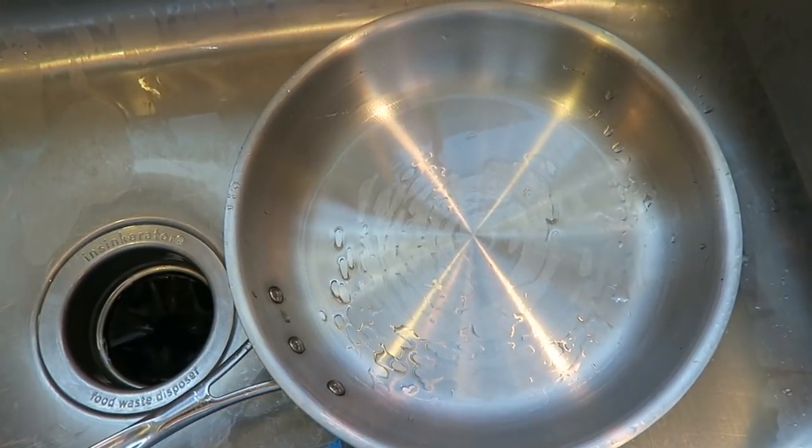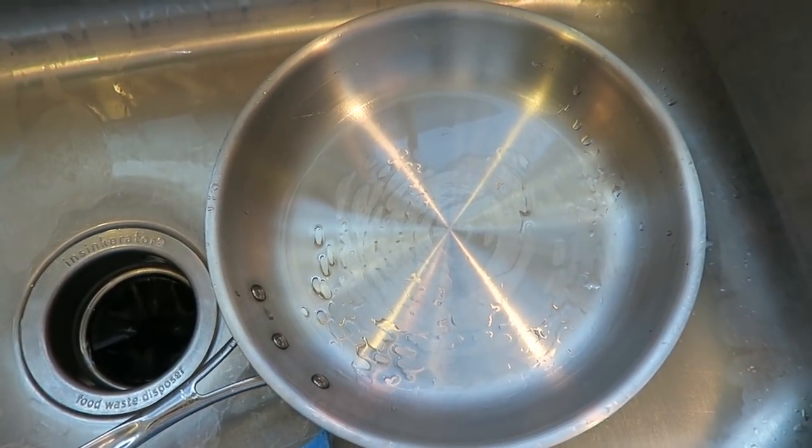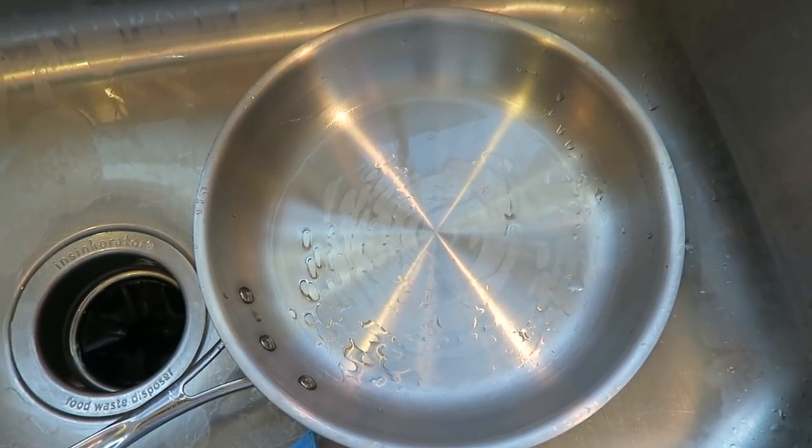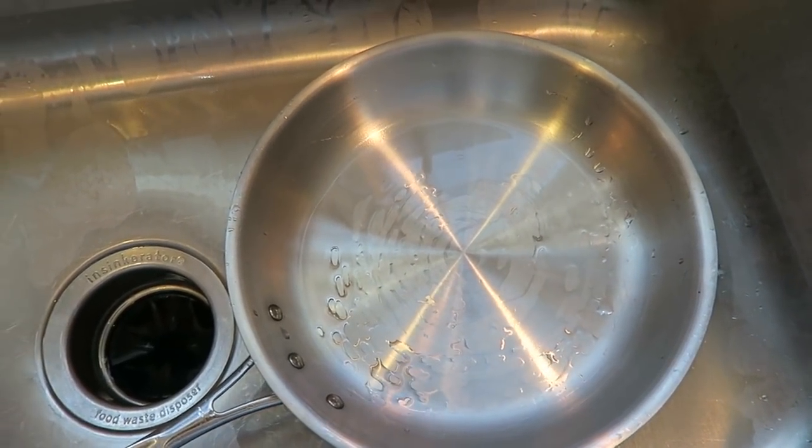But yeah definitely worked - vinegar and water and bring it to a boil. But other methods I don't think work so well so I will show you those as well. Okay this pan didn't start off horrible, it pretty much started off the exact same. This was just the dish soap plus water and I brought it to a boil and it didn't do anything.